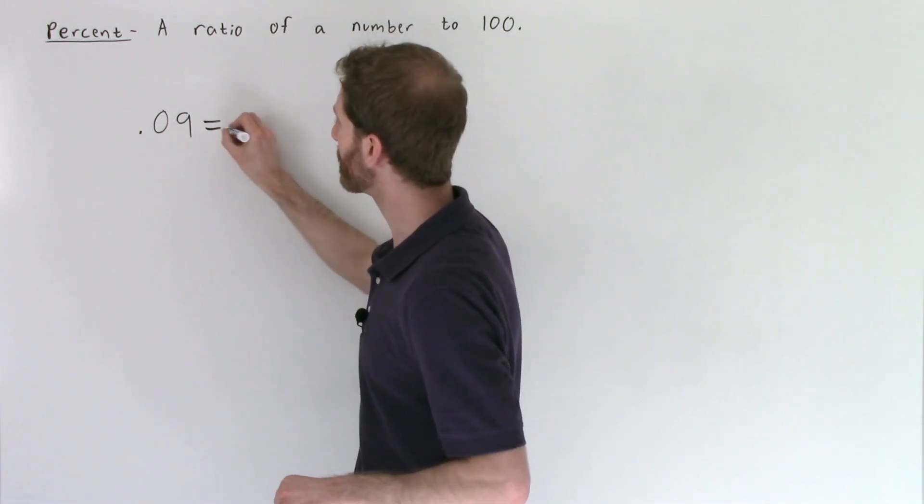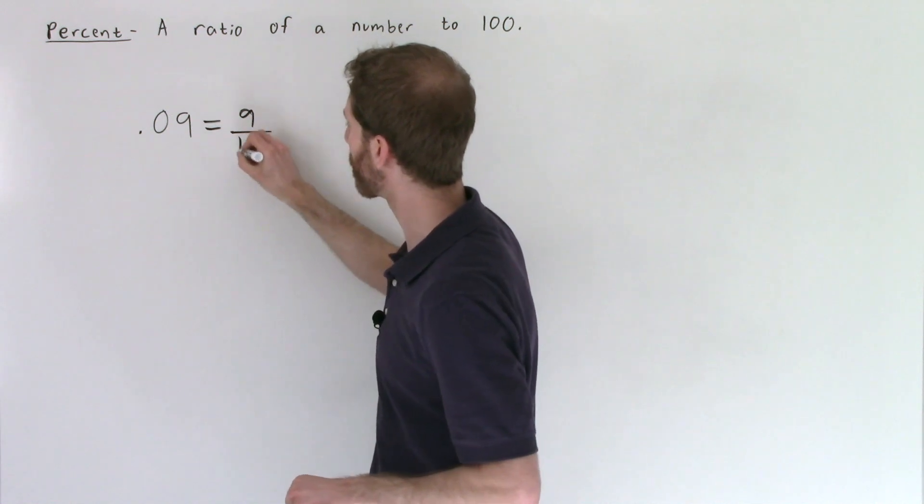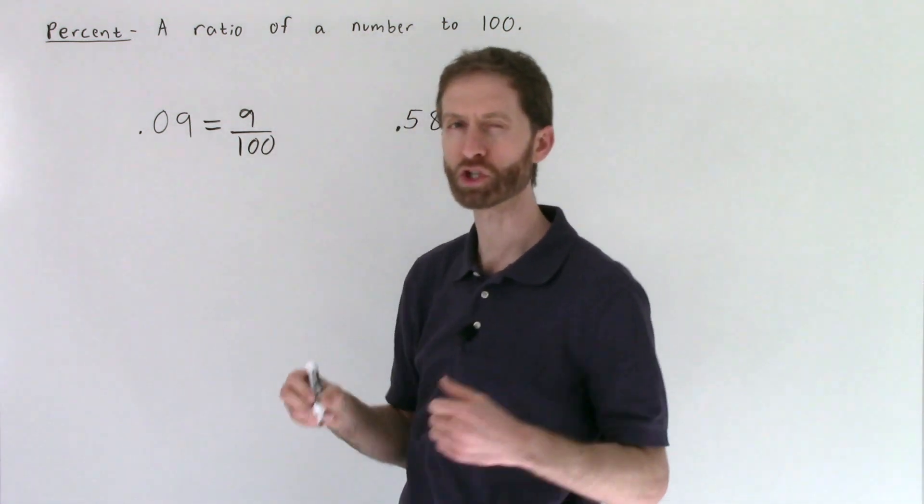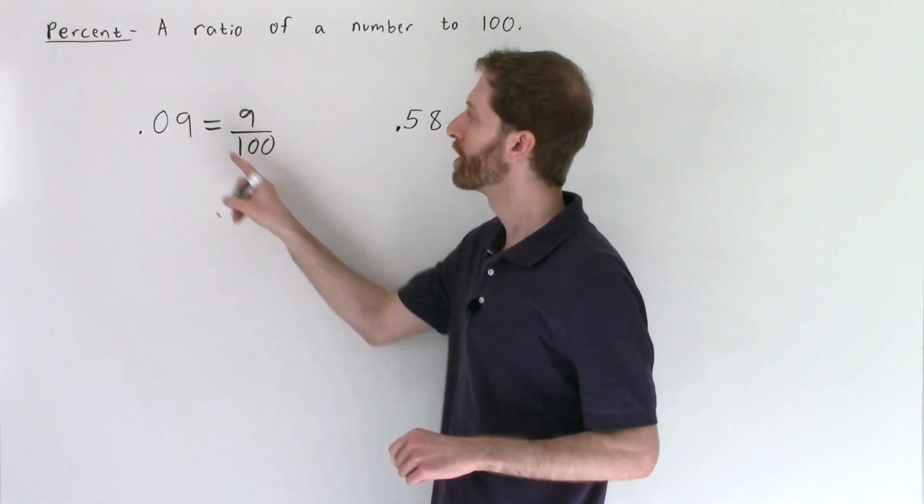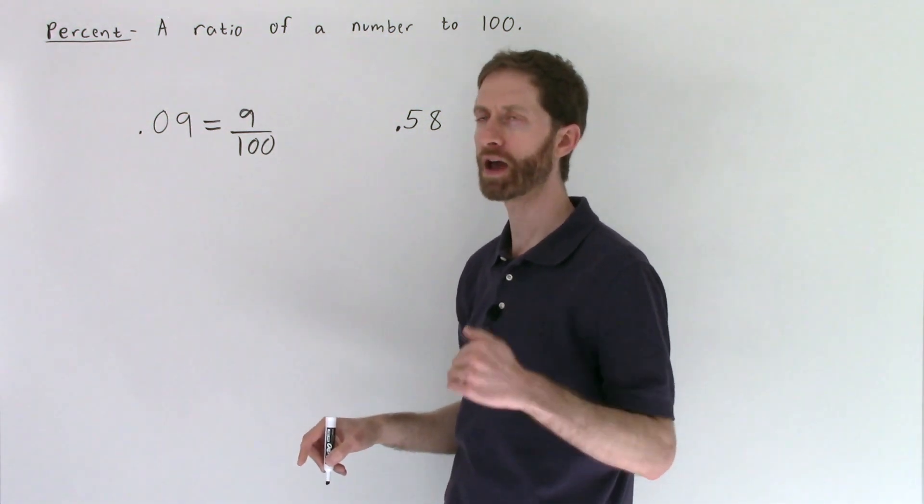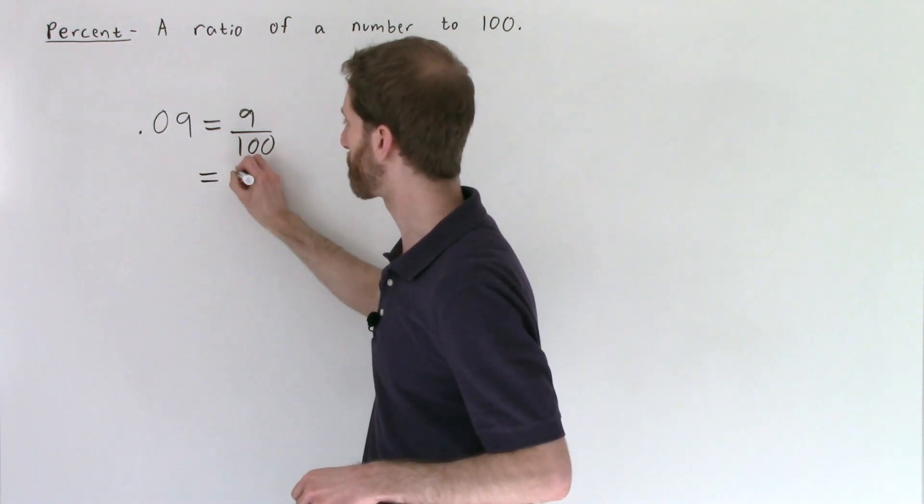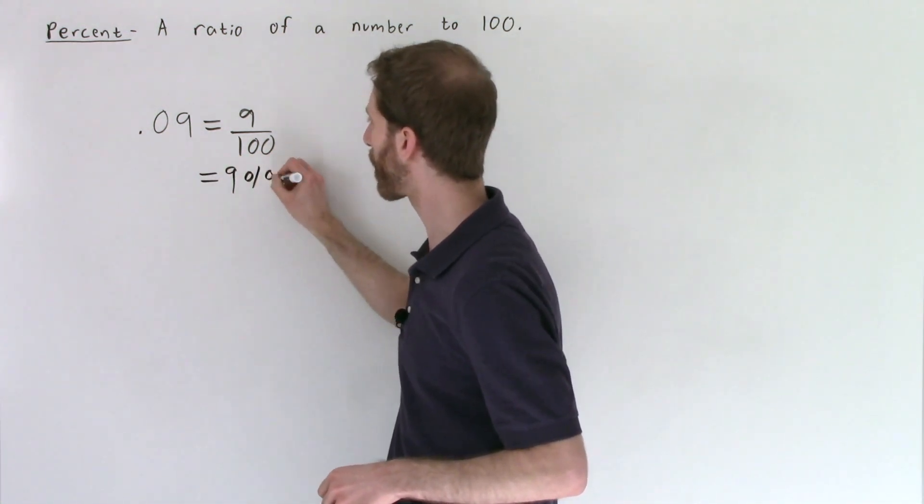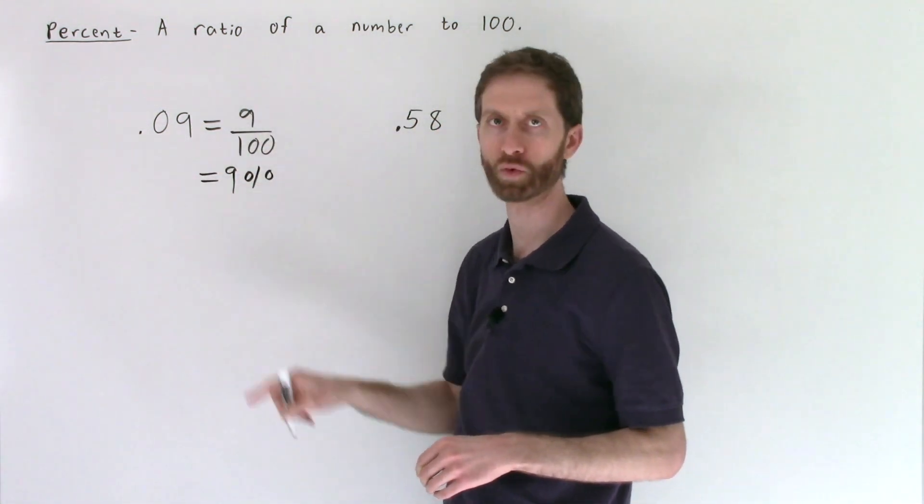So in my mind at least I'm thinking this is nine out of 100. Feel free to write it out, but I'm just showing you what's going on in the noggin. Nine one-hundredths. Well, nine out of a hundred is quite literally nine percent because we've got our ratio of a number compared to 100.